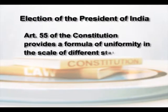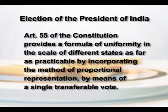Article 55 provides the formula of uniformity in the scale of representation of different states, as far as practicable, by incorporating the method of proportional representation by means of a single transferable vote. This article ensures that the seats of the states in aggregate within the Electoral College shall be equal with that of the entire population of the country. So the President of India is not only a representative of the entire nation, but also a representative of the people of different states of India.